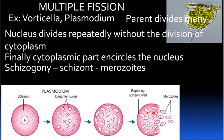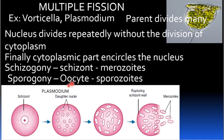This process in Plasmodium is called Schizogony, and the daughter cells produced are called merozoites. Another form of multiple fission is called Sporogony.